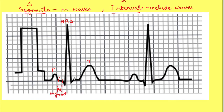PR segment is from the end of P wave to the beginning of QRS complex. Even though we say PR segment, we mark it till the beginning of QRS complex. PR segment represents the AV nodal pause — during this time the atria are depolarized but ventricles are at resting membrane potential. ST segment is from the end of QRS complex to the beginning of T wave. During ST segment, ventricles are depolarized and no current is flowing. TP segment is from the end of T wave of one record to the P wave of the next impulse.